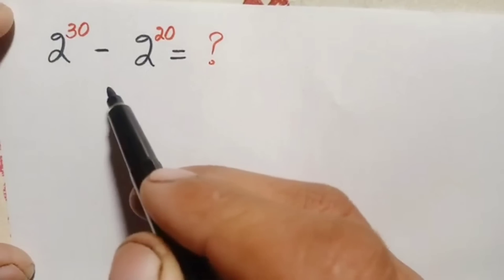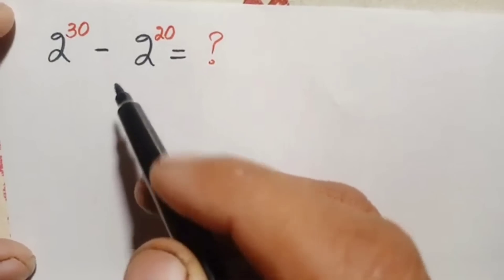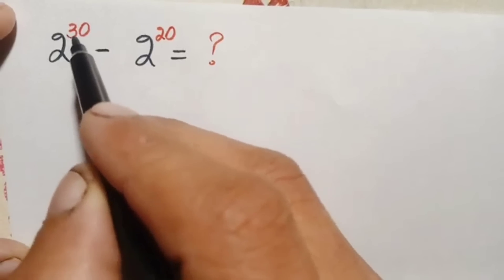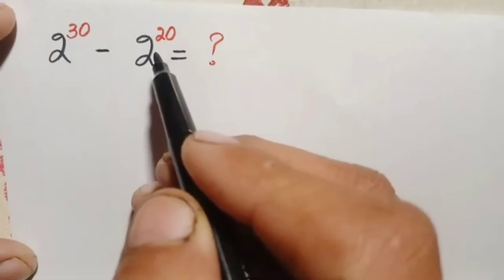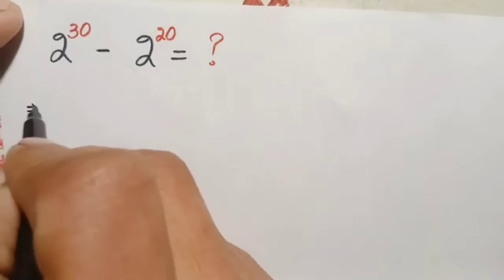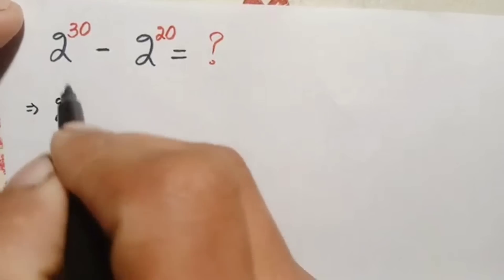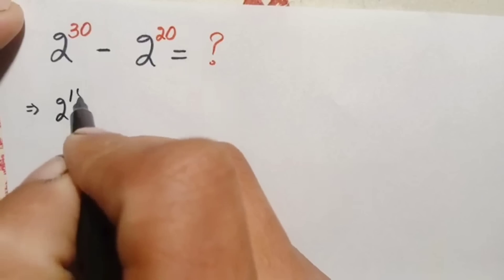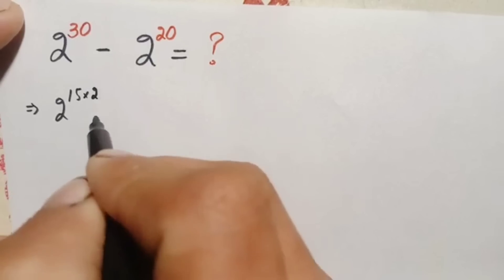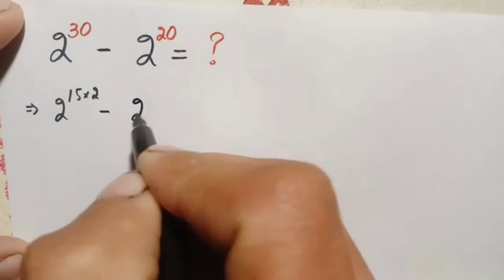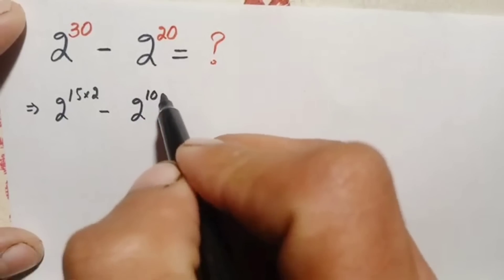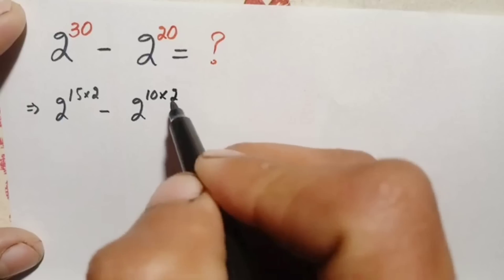We will try to solve this problem without using any calculator. First of all, we will try to factorize the powers 30 and 20. So we can write 2 raised to power 30 as 2 raised to power 15 times 2, which is 30, minus 2 raised to power 20, written as 10 times 2, which is 20.